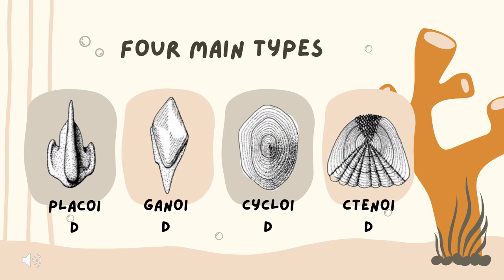Next we have the four main types of fish scales. First, we have the placoid scale, found in sharks and rays. These are made of a flattened base with a spine protruding toward the rear end of the fish. They're often called denticles because they're made of dentin and enamel, similar to what our teeth are made of. Next, we have ganoid scales, which are flat and don't usually overlap much on the body, and are found on fish like gars and paddlefishes.